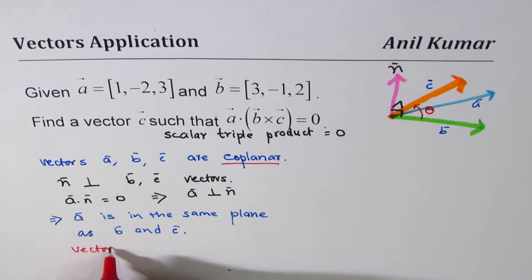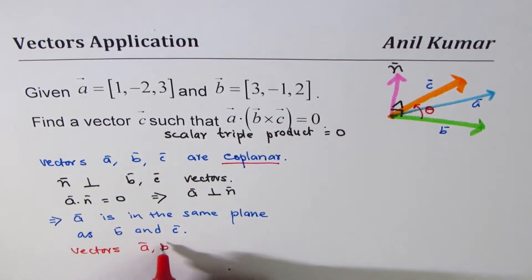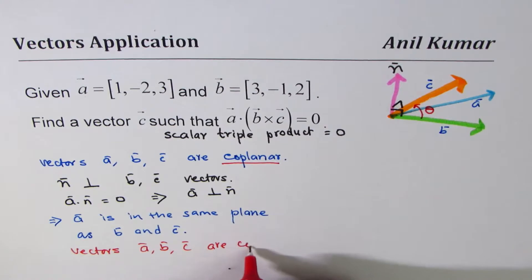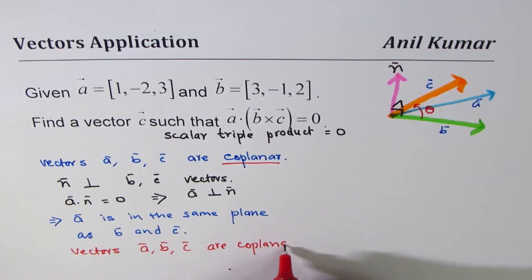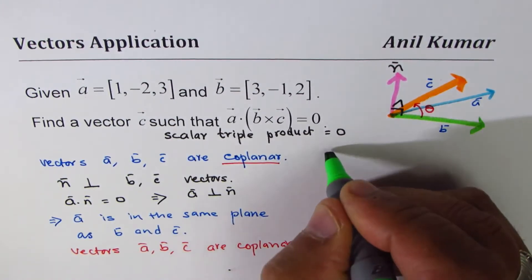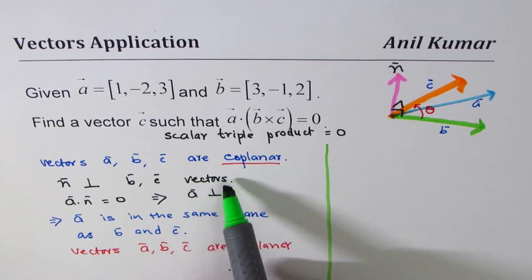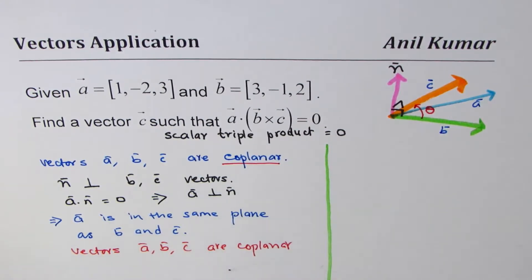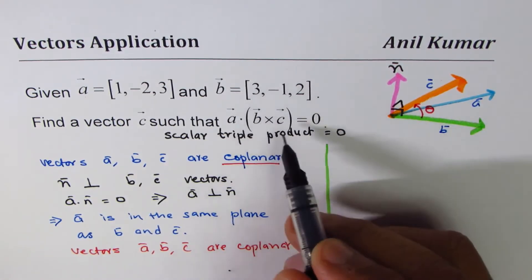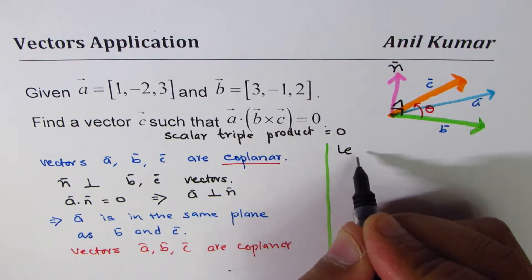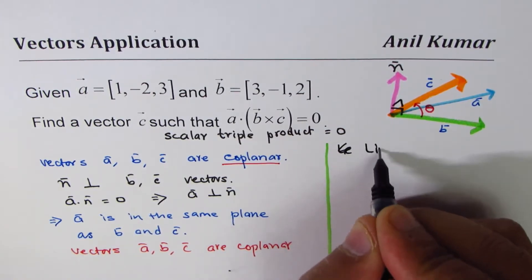The vectors a, b, c are coplanar. The second question is how to find or create a coplanar vector: by linear combination. Linear combination of vectors results into coplanar vector.